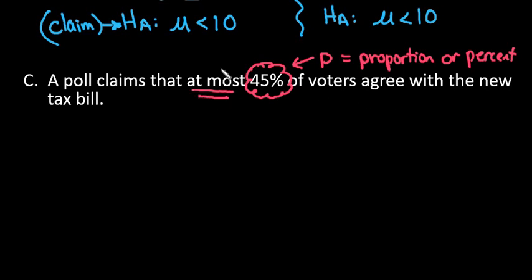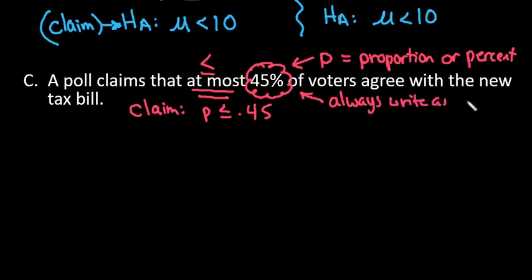At most means that it has to be less than or equal to. At most means the highest that it can be is 45%. So our claim that we would establish is p is less than or equal to 0.45. So with proportions, we always put this as a decimal. We don't ever leave it in the percentage form, we write it as a decimal.